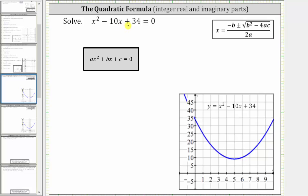Let's begin by listing the values of a, b, and c, where a is the coefficient of x squared, b is the coefficient of x, and c is the constant term. Remember, before we determine the values of a, b, and c, the equation must be set equal to zero.